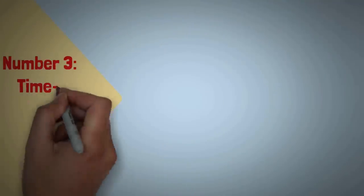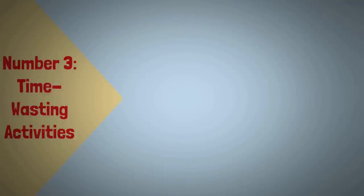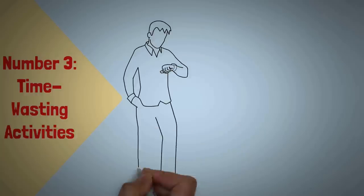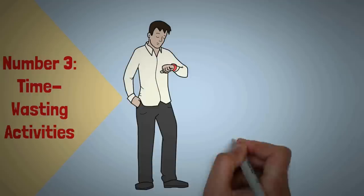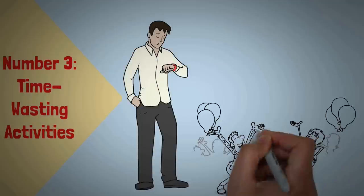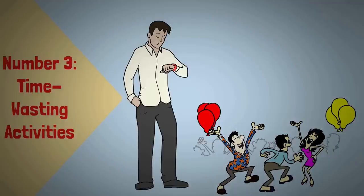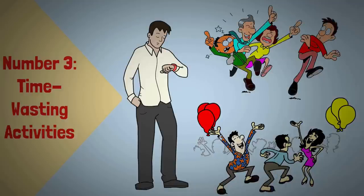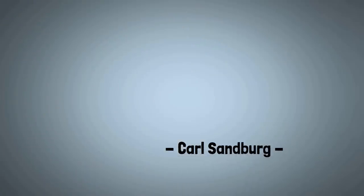Number 3: Time-wasting activities. With deep appreciation, Sigma males treasure their time, fully aware of its immeasurable value. They choose to walk away from activities that do not align with their goals or propel them toward their desired outcomes. They avoid time-wasting behaviors that hinder their progress. As the saying of Carl Sandburg goes: